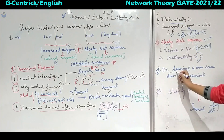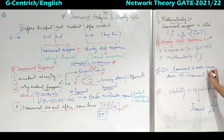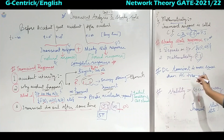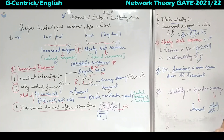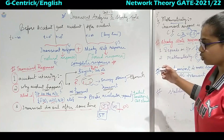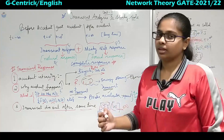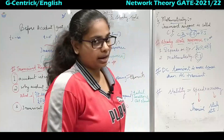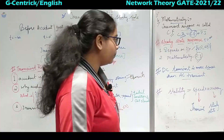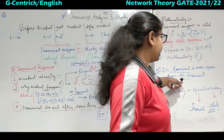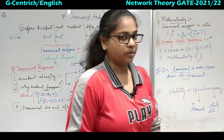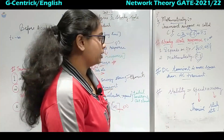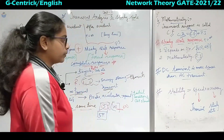DC transient is more severe than AC transient. Most of the questions from GATE come from the DC analysis part only. Very, very rare questions come from AC transient.